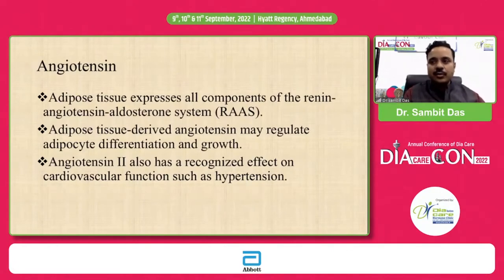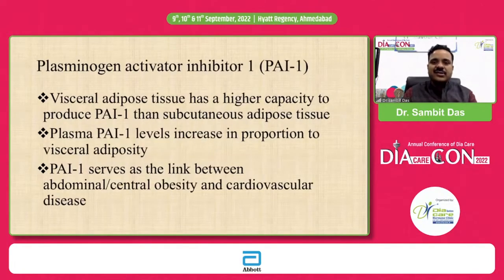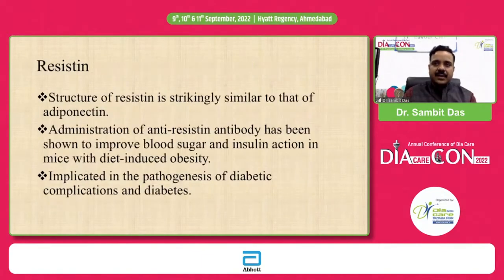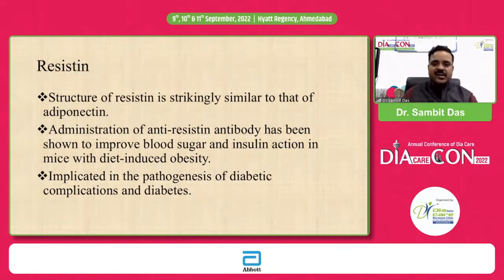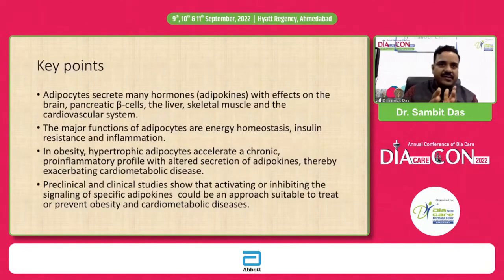Angiotensinogen is secreted directly from adipose tissue, and angiotensin II has recognized effects on cardiovascular function and hypertension. Plasminogen activator inhibitor-1 (PAI-1) is mostly secreted by visceral adipose tissue — plasma PAI-1 levels increase in proportion to visceral adiposity and are linked to insulin resistance, central obesity, and cardiovascular disease. Resistin has a structure strikingly similar to adiponectin, and there is recent interest in an anti-resistin antibody shown to reduce blood glucose and improve insulin action in diet-induced obesity in mice, though this remains in basic research and is implicated in the pathogenesis of diabetic complications.